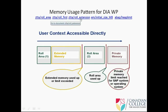Why can't a process use everything? We can set a quota. Everything without limits is dangerous — if one work process starts using everything, others cannot use it. If extended memory gets filled up, it's dangerous too.